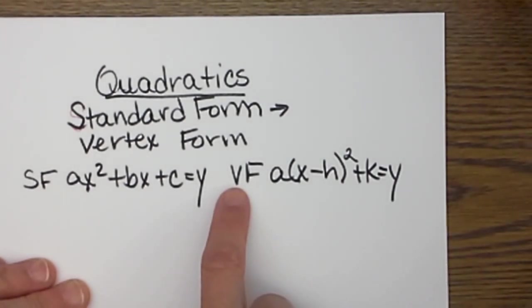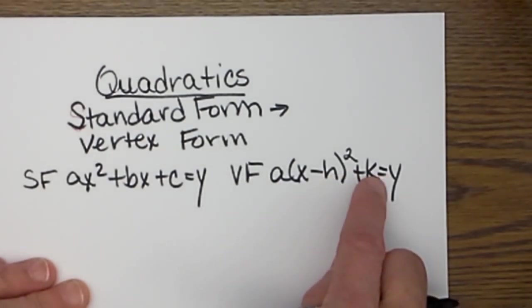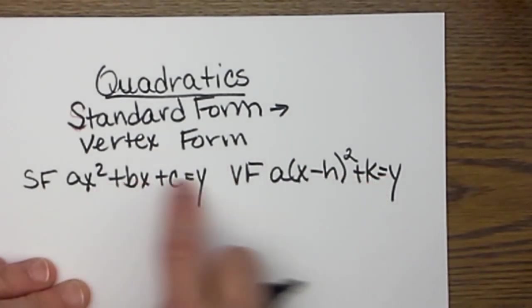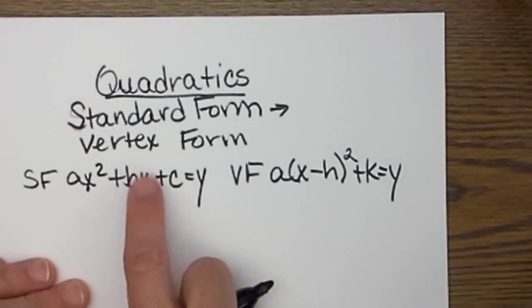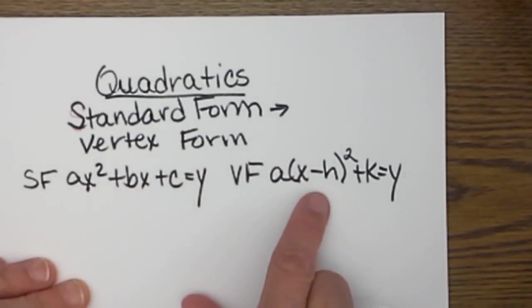The vertex form is very handy because h,k is your vertex, and standard form is nice if you are using the quadratic formula. Sometimes we have to go from standard form to vertex form, so let's learn how to do that.